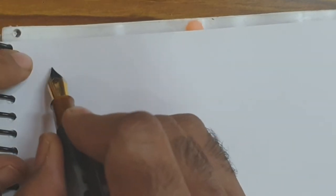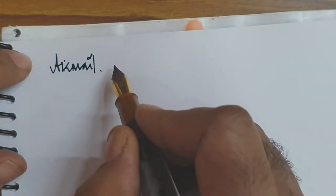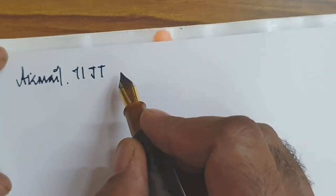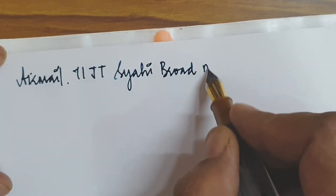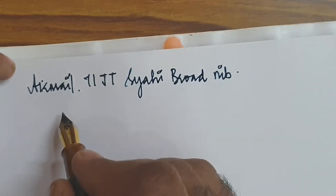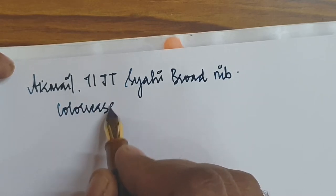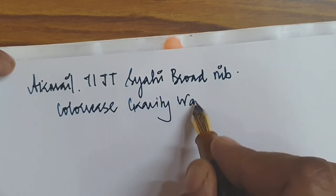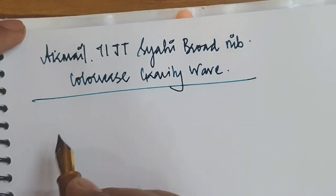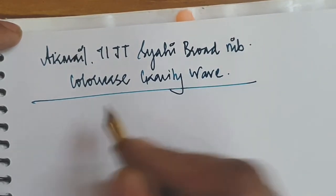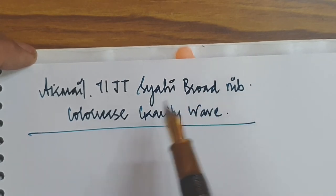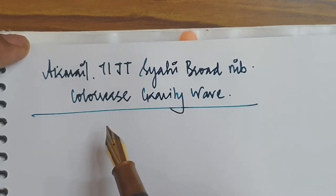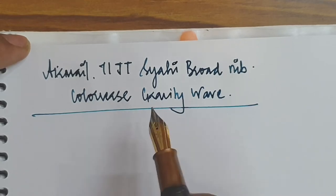How to buy and what is the writing experience, we'll come to that in a jiffy. I'm starting off with the Syahi steel nib. This is an Airmail 71JT. The ink is Colorverse Gravity Wave, which is one of my favorite inks. And this is a very cheap photocopier paper. The reason I am using this is because the difference between the two nibs can be felt best on a regular, usual writing paper. If you use a Tomoe River paper, you would not find much difference between the two nibs because it will be smooth on both.